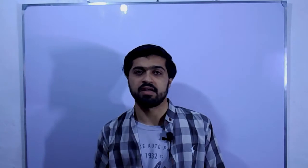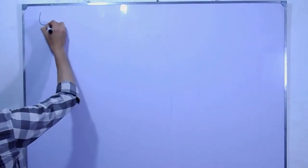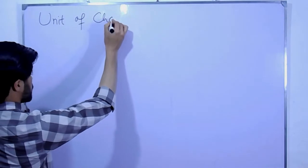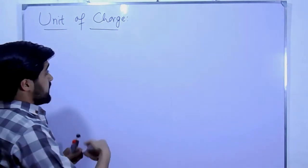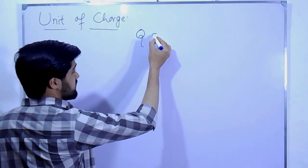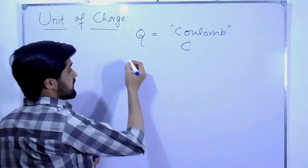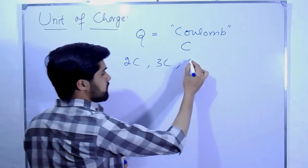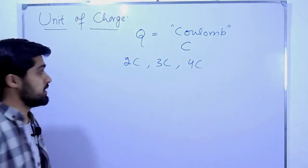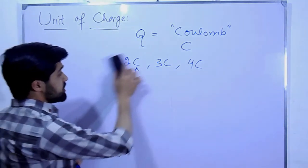In today's lecture, we have to understand what charge is — that is the intrinsic property of a body. A very important thing is the unit of charge. What is the unit of charge? The unit of charge is Coulombs, represented by capital C.